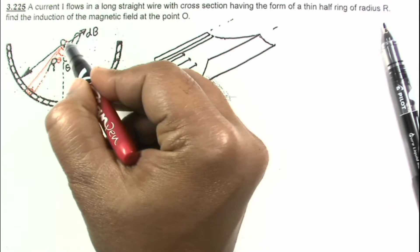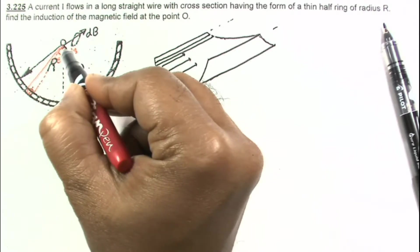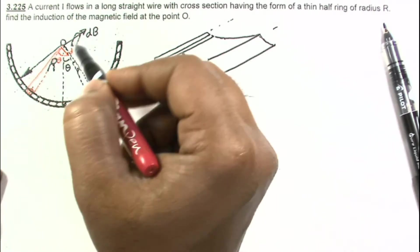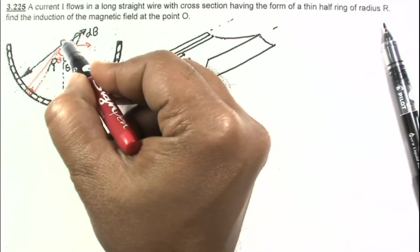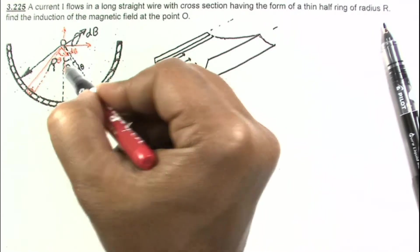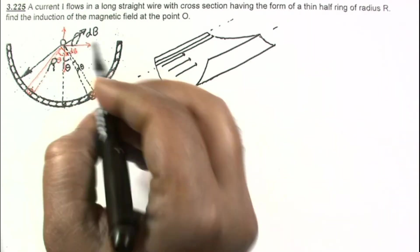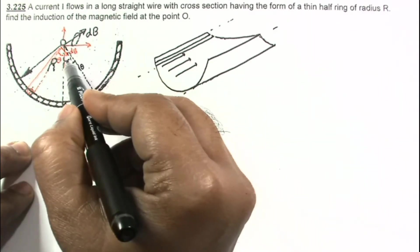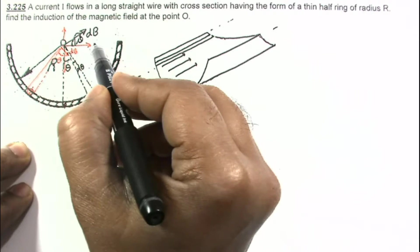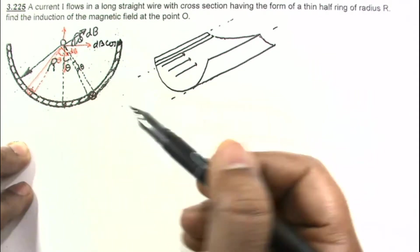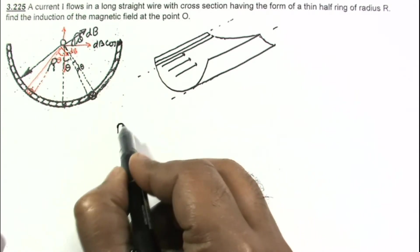This dB has two components: one in the upward direction and one in the horizontal direction. The symmetric dB on the other side has a downward and horizontal component. From symmetry, the vertical components will cancel out, and the horizontal components will add up. So the net magnetic field will be directed towards the right in the diagram. The contributing component from each element is dB cos theta.